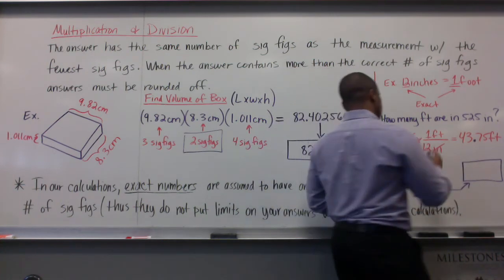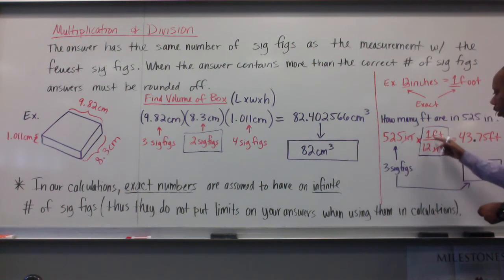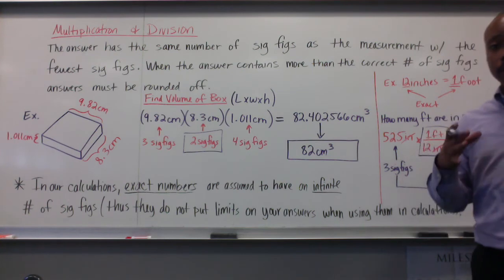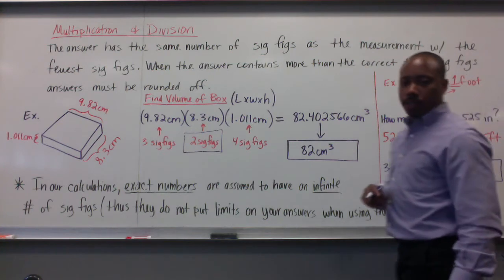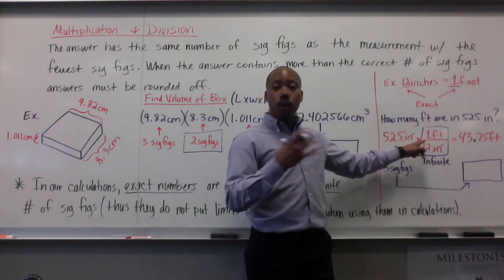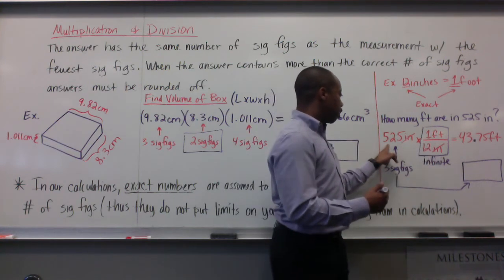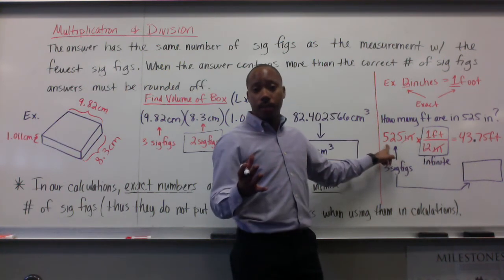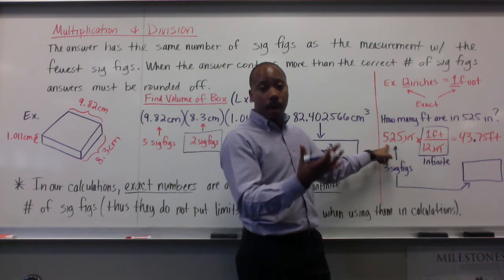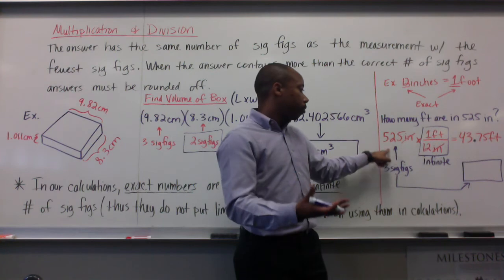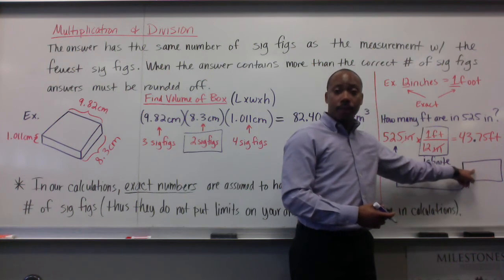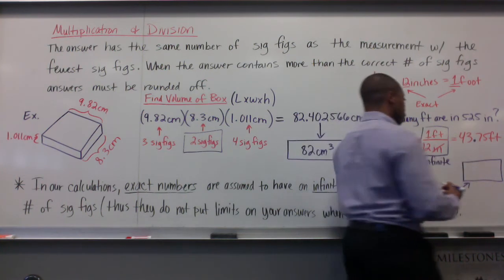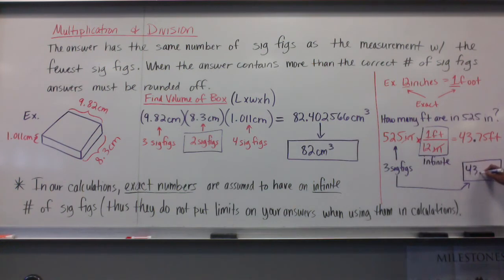This 1 and this 12 are exact numbers, so they do not alter the number of significant figures — they have an infinite amount. What will alter the number of significant figures is the 525, which is a measured value with three significant figures. So it determines that my final answer will have three significant figures.